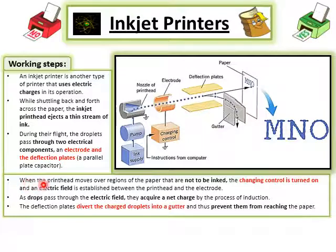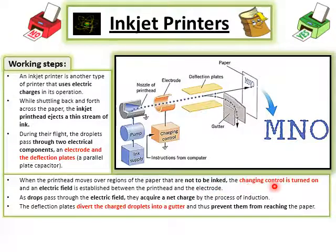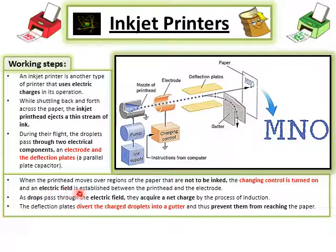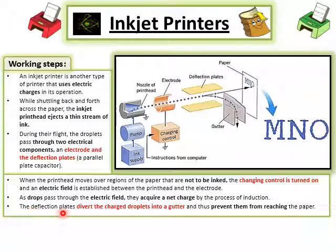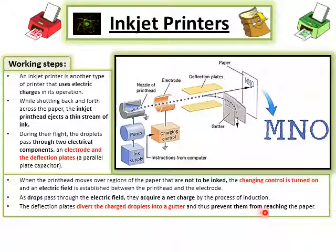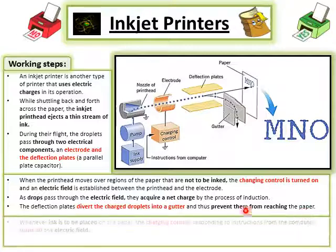When the print head moves over regions of the paper that are not to be inked, the charging control is turned on and an electric field is established between the print head and the electrode. As the drops pass through the electric field, they acquire a net charge by the process of induction. The deflection plates divert the charged droplets into a gutter, thus preventing them from reaching the paper.